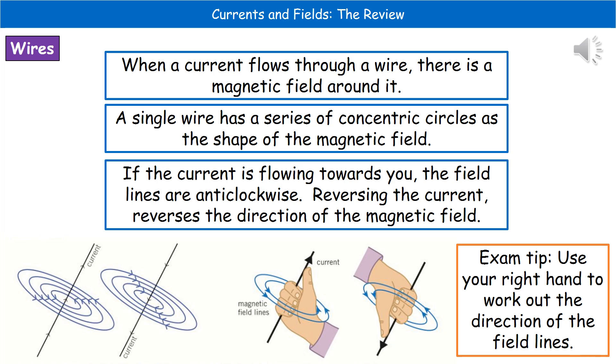Welcome to our review on currents and fields. The first thing we need to know is that when a current flows through a wire, a magnetic field is generated around it. The shape of that magnetic field is a series of concentric circles, and you can see that on the left hand side of the screen.